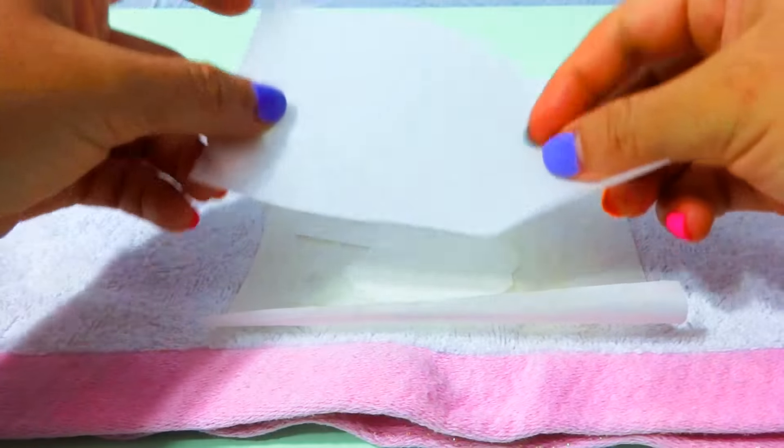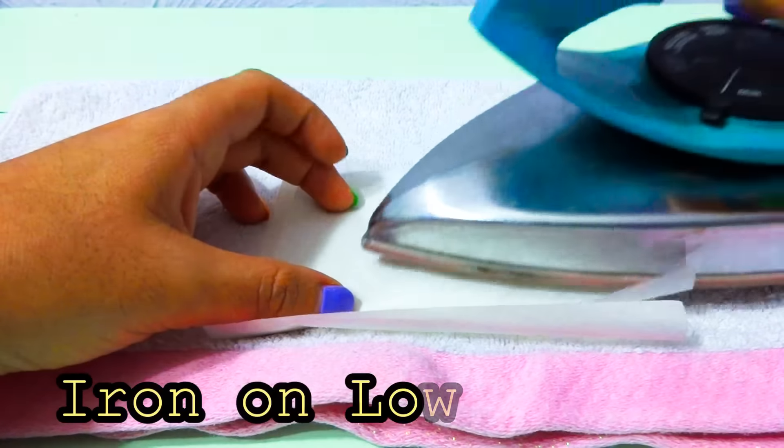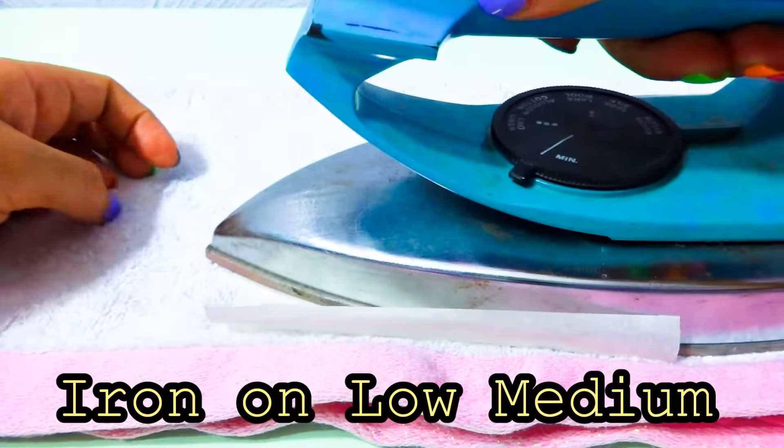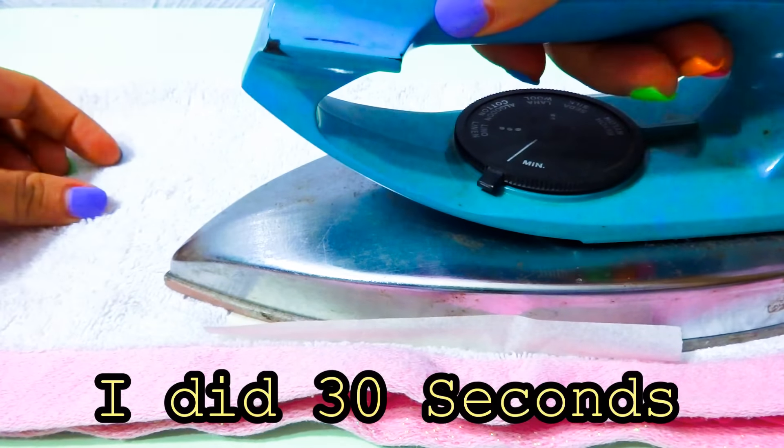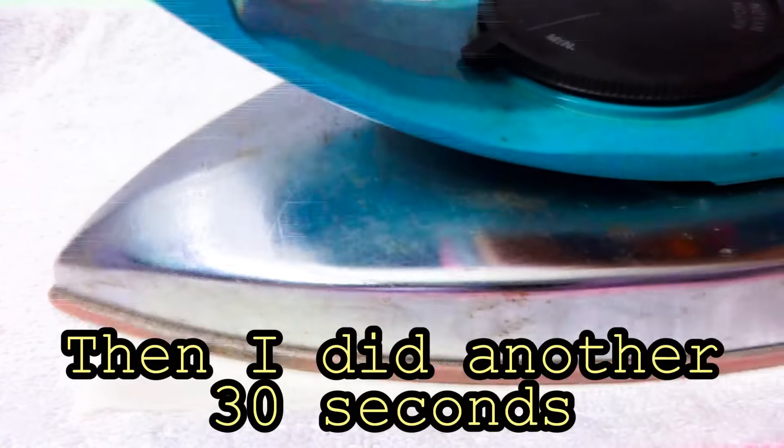Place two pieces of parchment paper on top and on the bottom, or one on each side. This is going to prevent it from sticking to anything. With the iron on a low-medium heat, I pressed it on top for 30 seconds, then flipped it over and did another 30 seconds on the other side to make sure everything melted together.